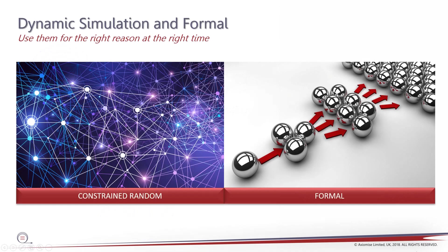So let's see what it's all about. Simulation, especially dynamic simulation, has been in use for many years for verification, and formal verification has been slowly getting adopted in mainstream verification. So how do these two things compare? On one hand, the most widely used form of dynamic simulation is constraint random, which as the name suggests is random in nature in the presence of constraints. On the other hand, you have formal verification, which is systematic, state-based search leading up to exhaustive verification.